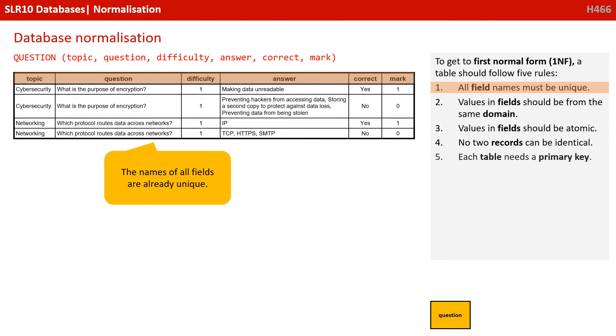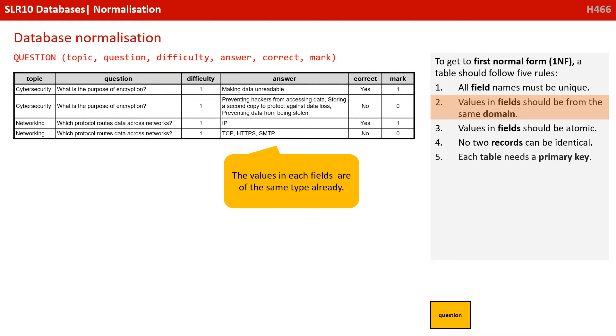So let's step through the rules. To get to first normal form, all field names must be unique. Well, the name of all fields are already unique, so rule 1 is met. Okay, rule 2, the values in each field should be from the same domain. Well, the values in each field are of the same type already, so rule 2 has been met.